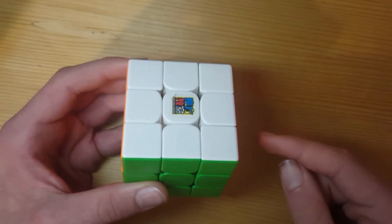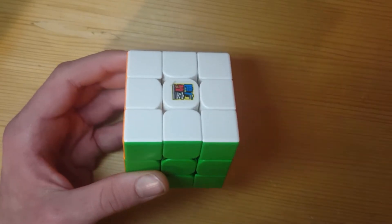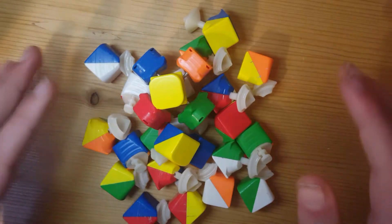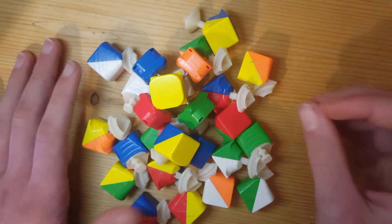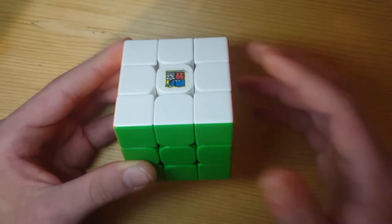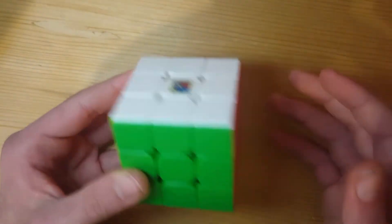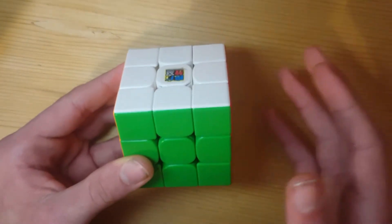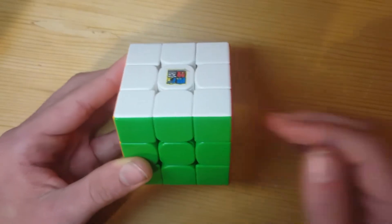So to take apart your 3x3 you can just do this. And to put it back together you can just do this. But that takes a lot of practice so in this video I'm gonna be going over an easier way to disassemble and reassemble your Rubik's Cube.